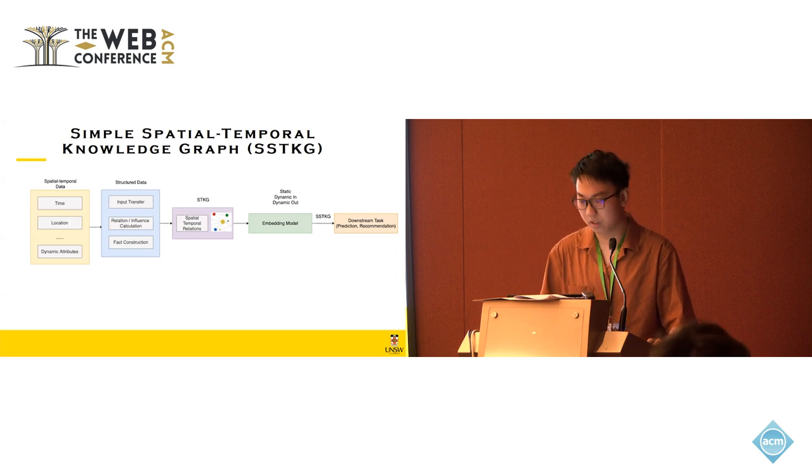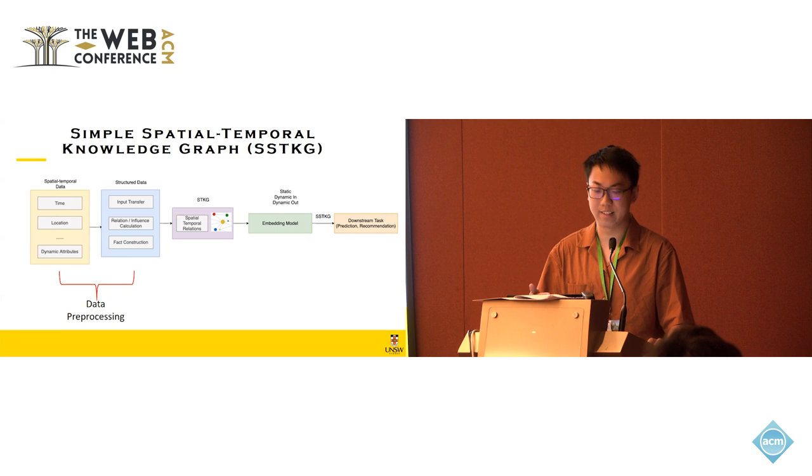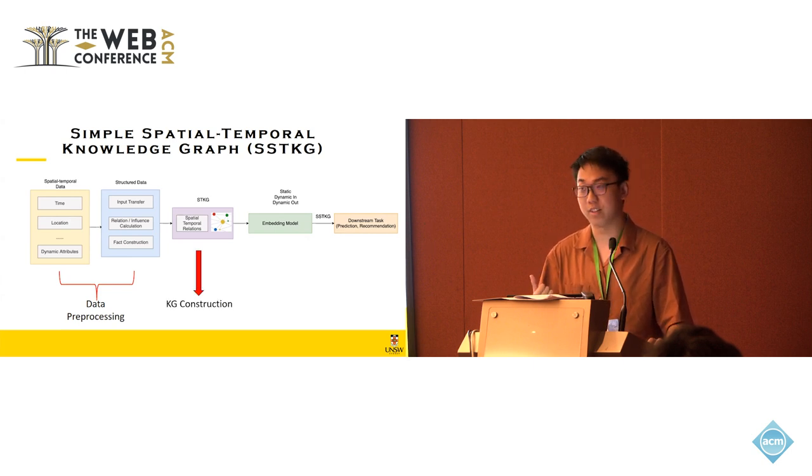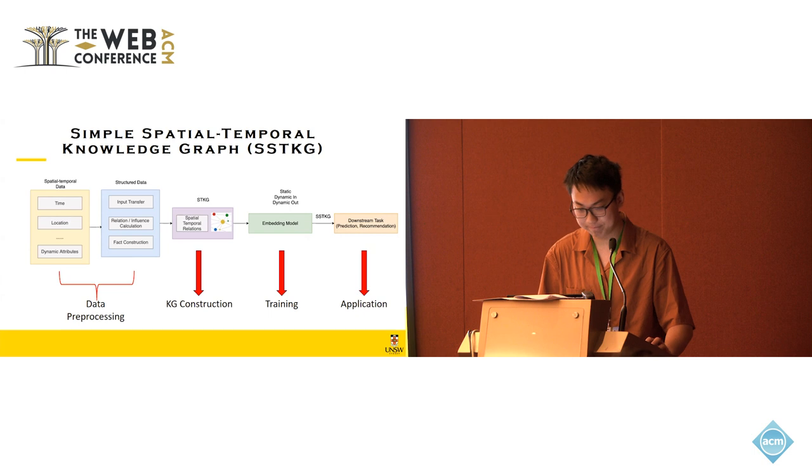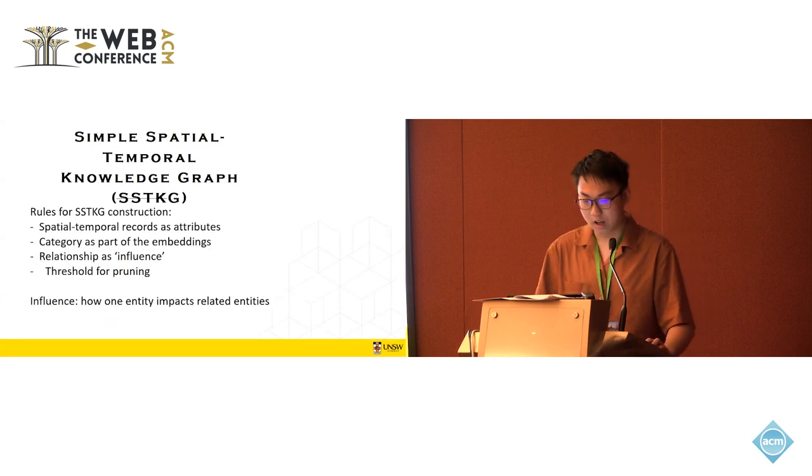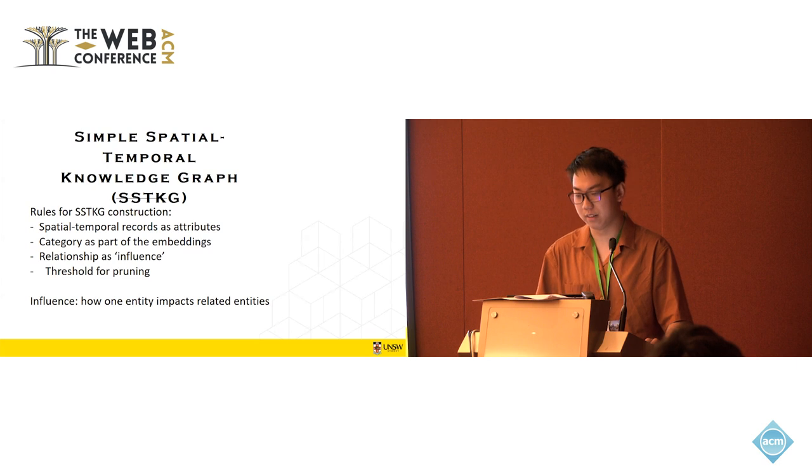Here is the framework. We first put raw data, including time and location. We pre-process into structured one. Then a raw knowledge graph is established and sent into training. And in the training, we use last three-step embedding, which I will introduce later. And at last, embedding will be used for downstream tasks. In our case, it is prediction.